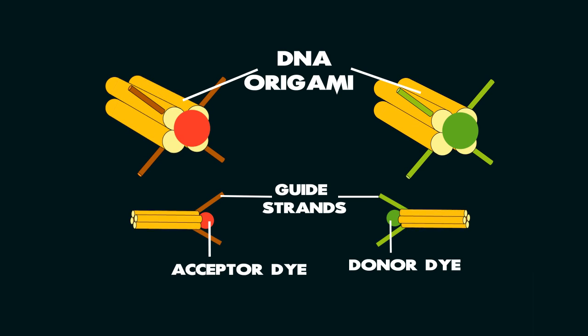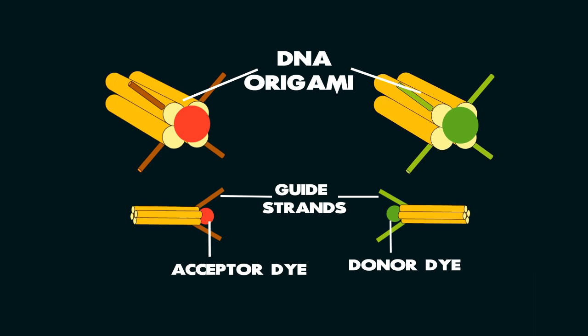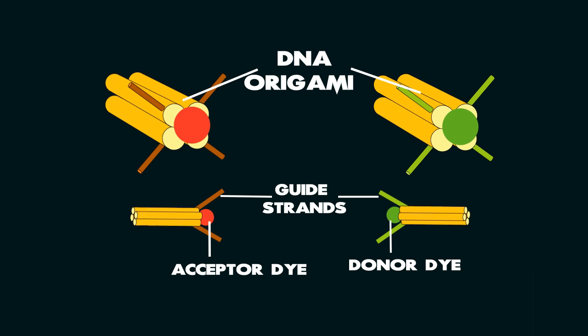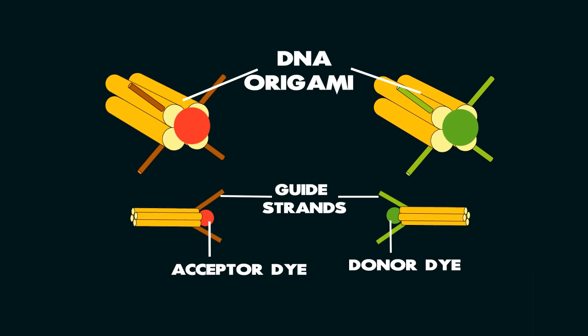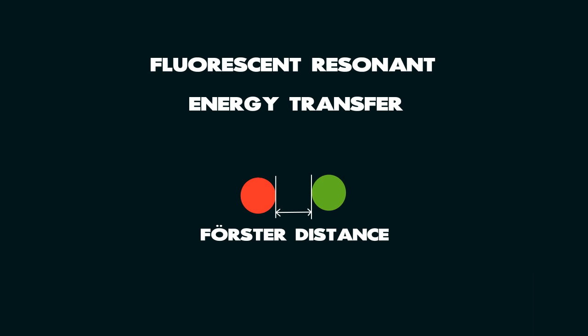These nanoparticles can be loaded with fluorophore tagged DNA origami. Our team designed two variants of the origami structure, one with a green donor dye and the other with a red acceptor dye. In addition to this, the two structures have complementary guide strands which help them to bind to each other. These dyes exhibit the phenomenon of fluorescent resonant energy transfer.